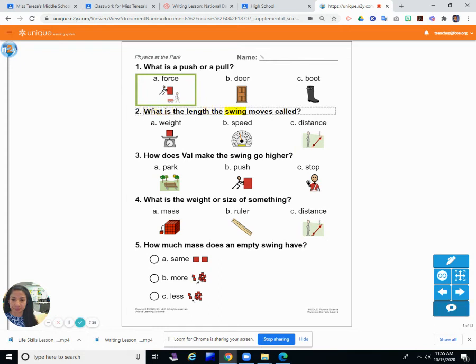Number two. What is the length the swing moves called? The length that the swing moves. So we're moving forwards, backwards. The length is the weight, the speed, or the distance. What do you say? Do we think it's the weight? Let's see. Weight. The speed. Distance. The distance. The length the swing moves or the how far something moves when you push it is the distance.